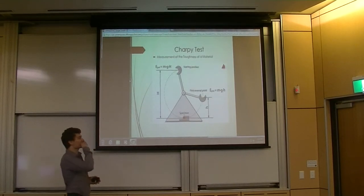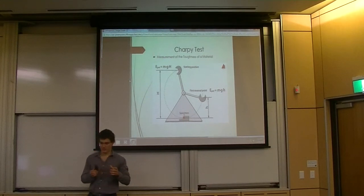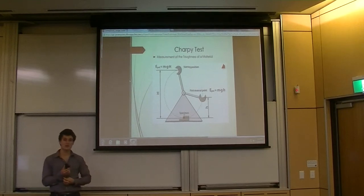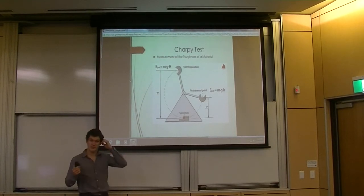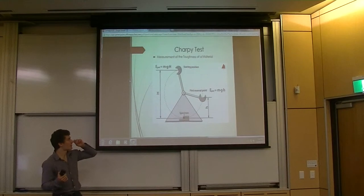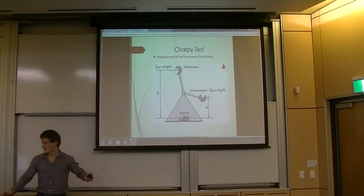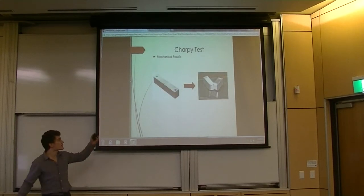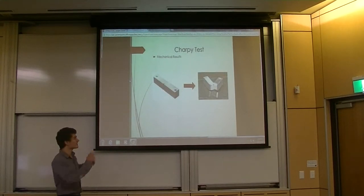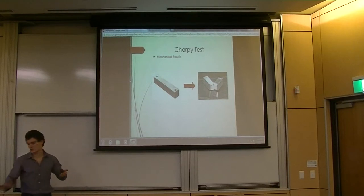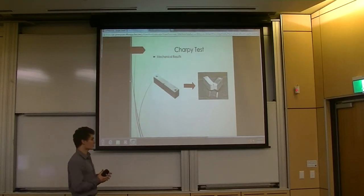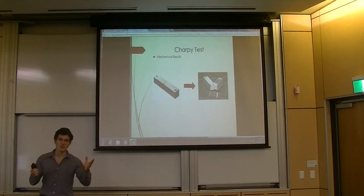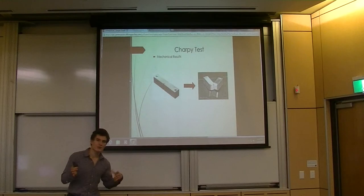So the Charpy test uses the principle of potential energy differences to calculate the amount of energy that can be absorbed by the specimen. And of course, this amount of energy is called the toughness of the materials. The Charpy test is actually widely used in the industry because it is cheap and provides really reliable results.